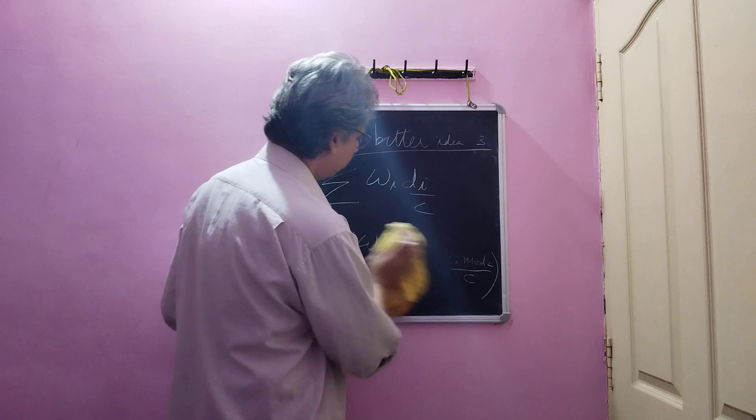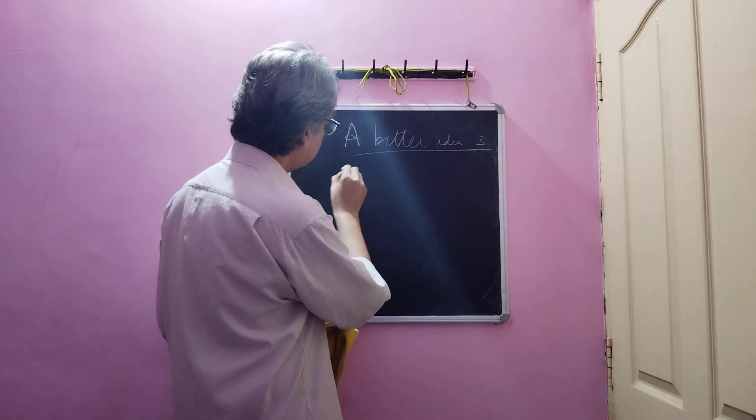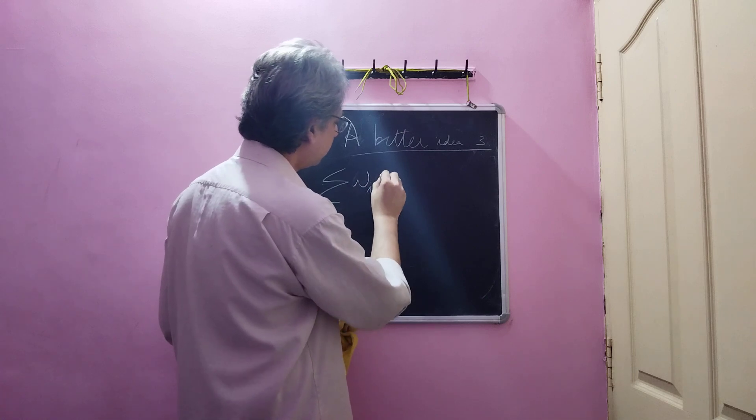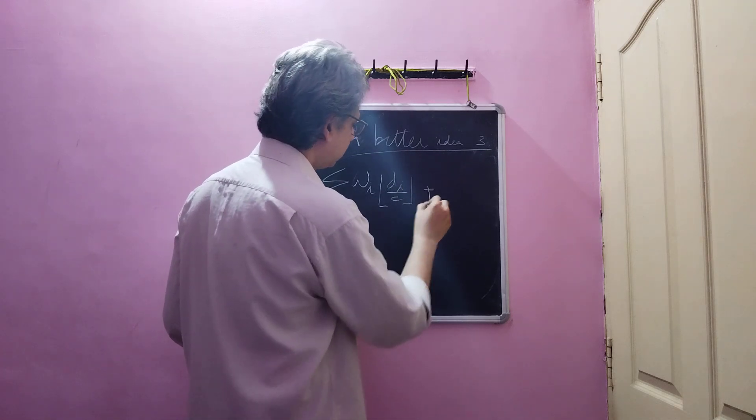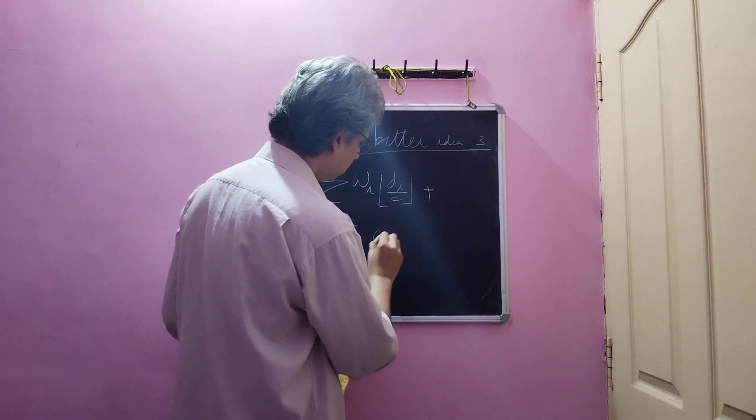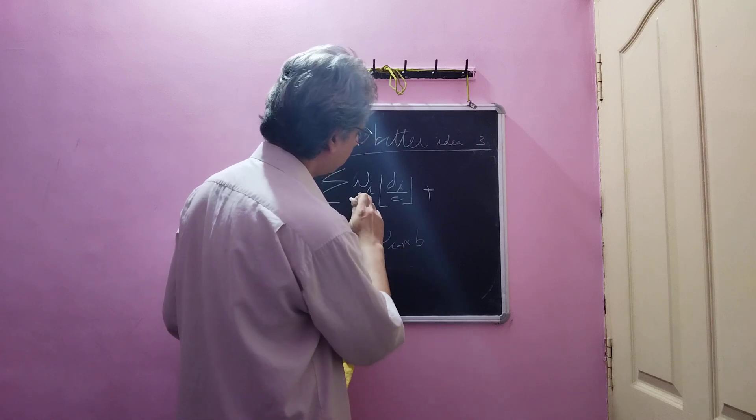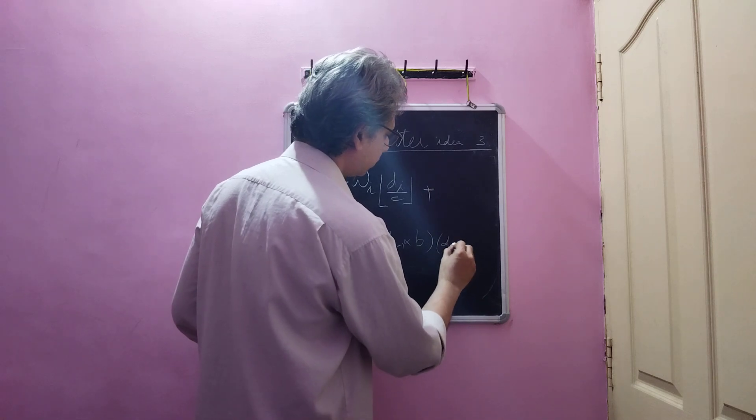Now we know that wi is equal to, in other words this would be nothing but summation wi times floor of di by c plus summation wi minus 1 into b wi times di mod c.